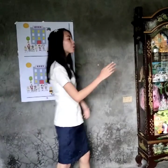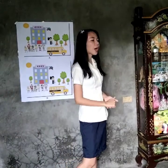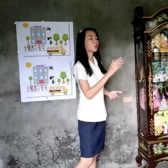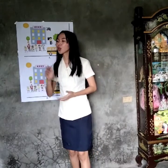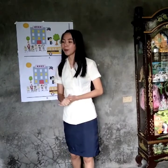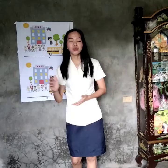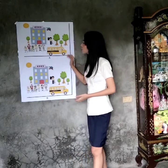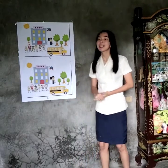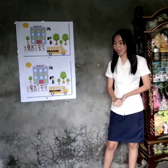Row 1 would be group 1, row 2 would be group 2, row 3 would be group 3, and row 4 would be group 4. Each group will give one difference of the two pictures.